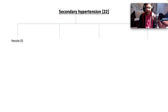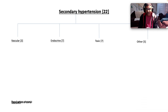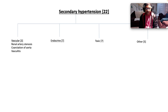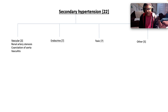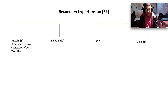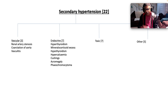Secondary hypertension broadly can be classified into vascular etiologies, endocrine etiologies, toxic etiologies, and others. Under vascular: renal artery stenosis will eventually cause hypertension with hypokalemia because you're switching on the renin-angiotensin-aldosterone system — the RAS system. Coarctation of the aorta can also cause it, where you have radio-femoral delay clinically. Vasculitis has a variety of etiologies, both primary and secondary. Watch out for autoimmune disease there.